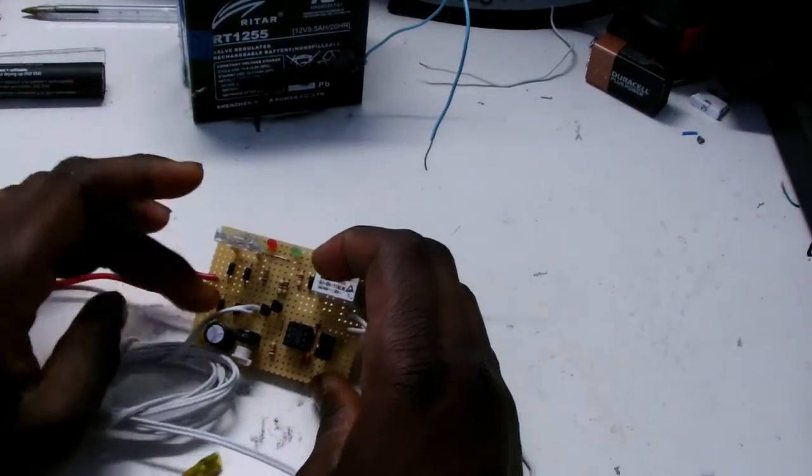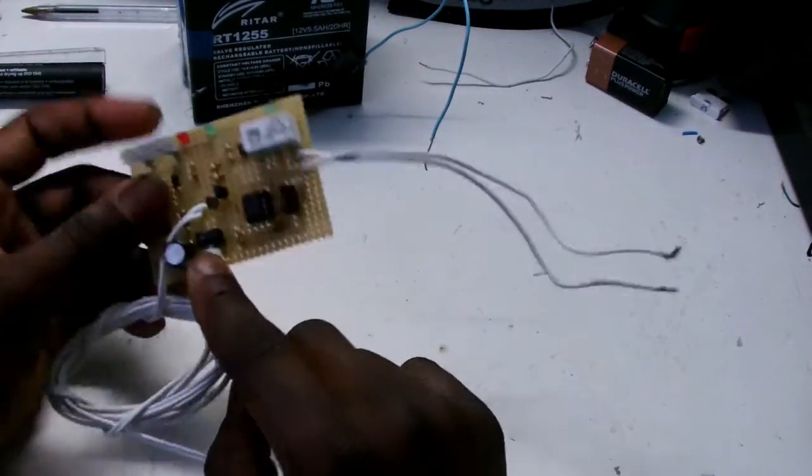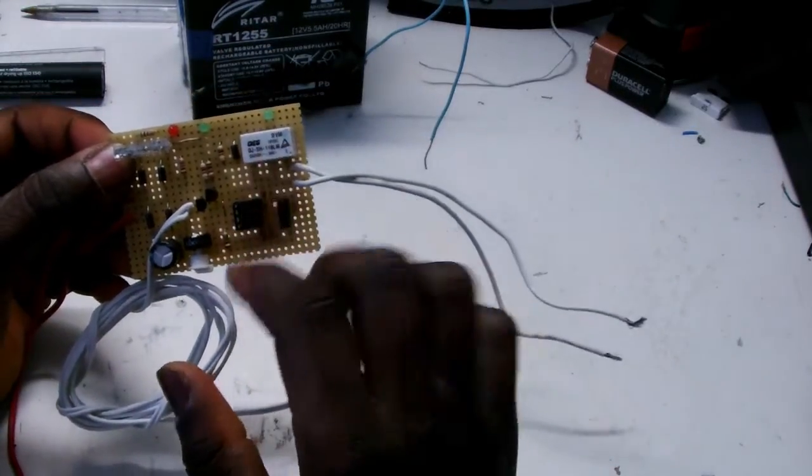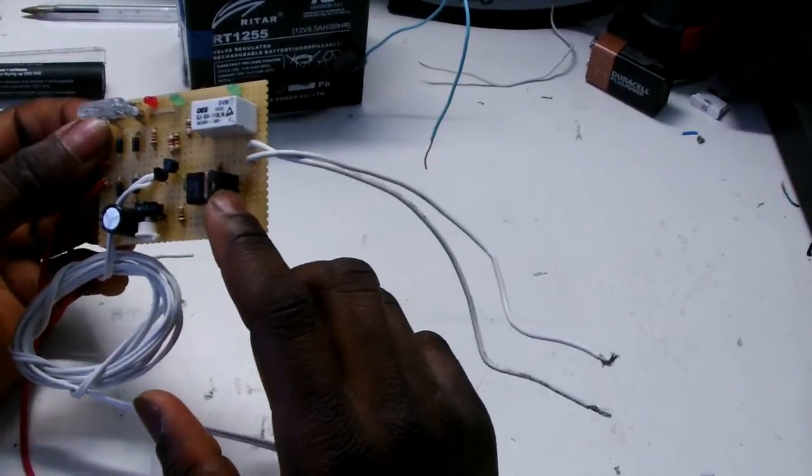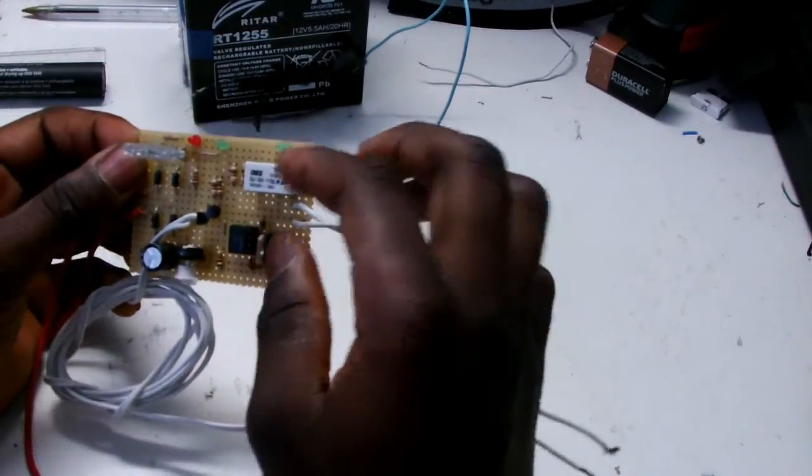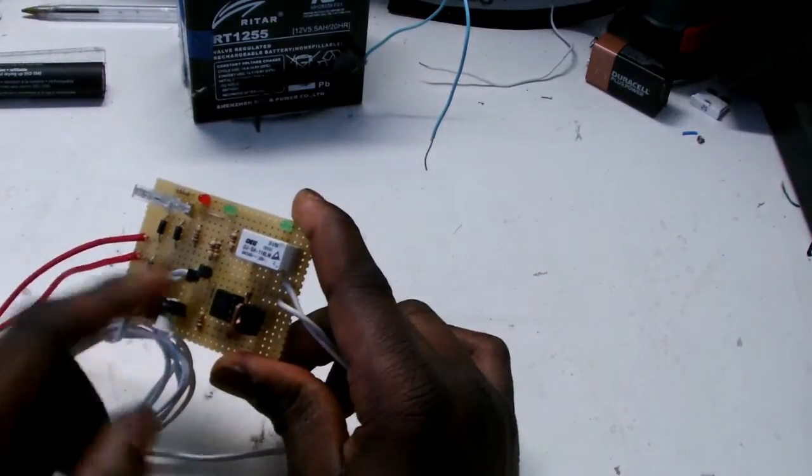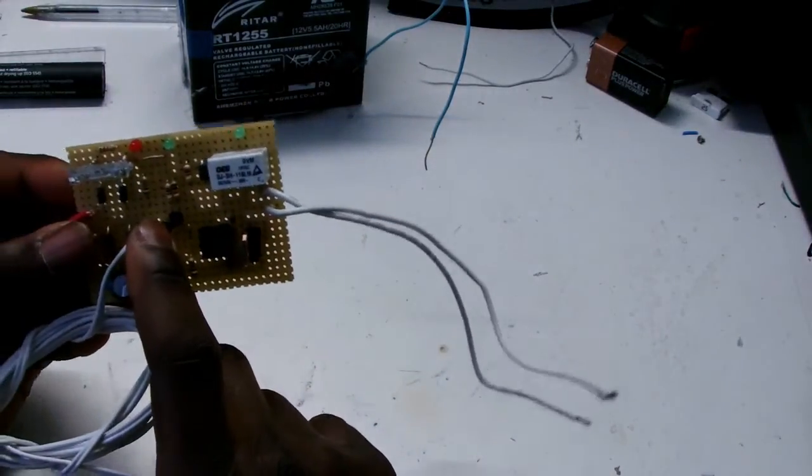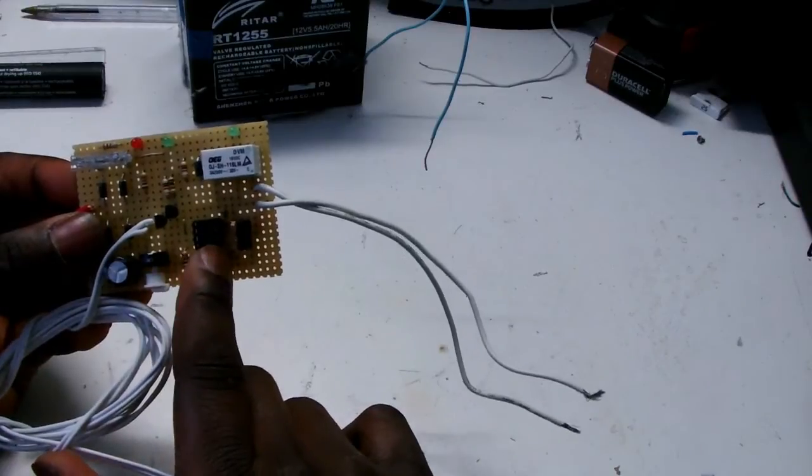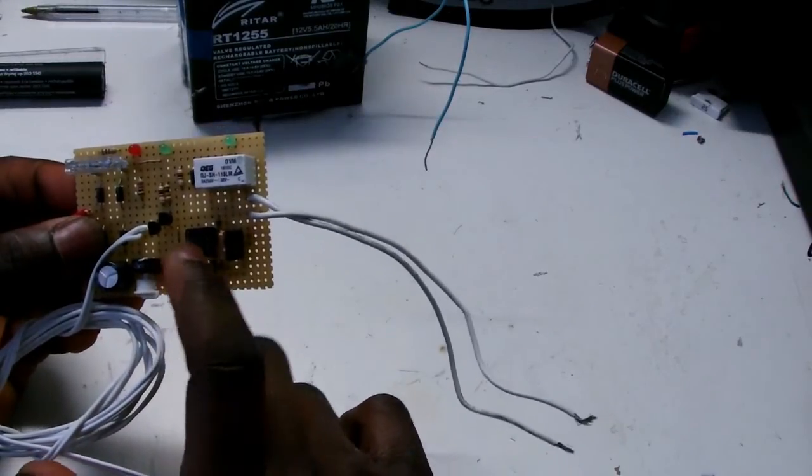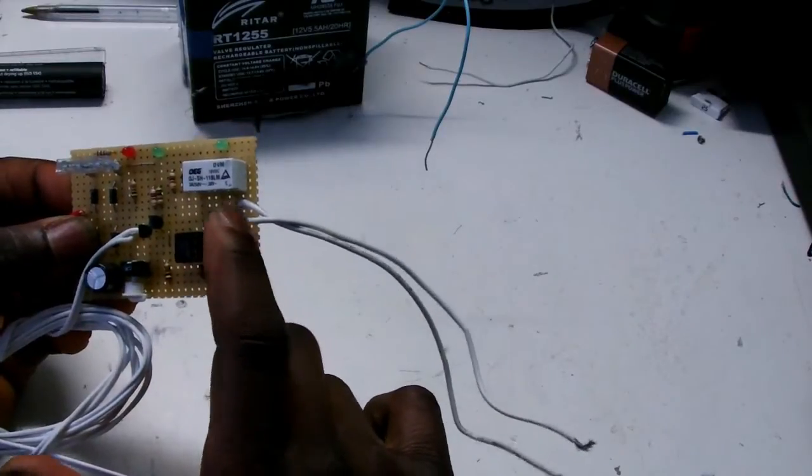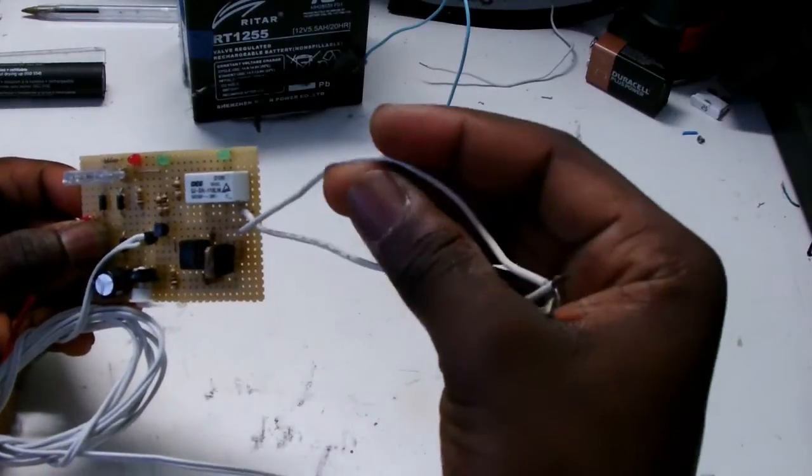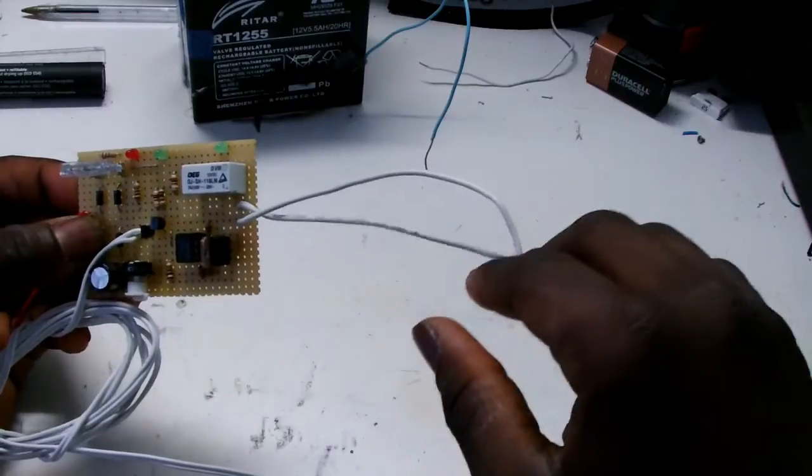You have a 10k potentiometer here for adjustment of the sensitivity of the sensor, and a TIP122 transistor for driving the relay for high current. The signal will be picked up here, goes to the transistors, then the signal gets sent to a MOSFET chip and this one is going to drive the relay. This relay is going to turn on. These wires you're going to hook up with your headlights of the car.